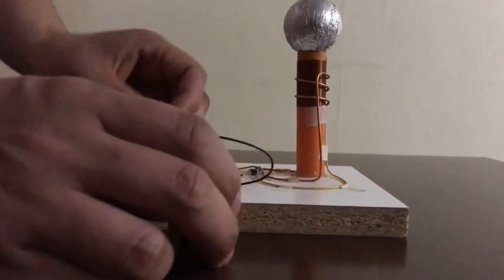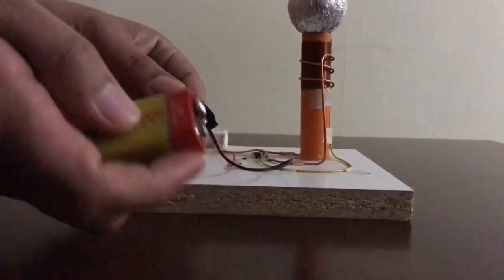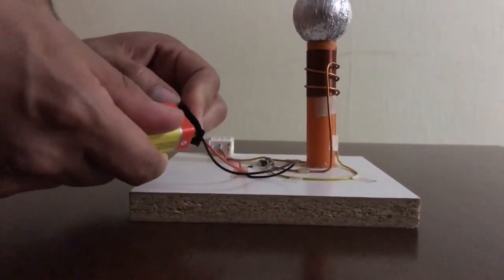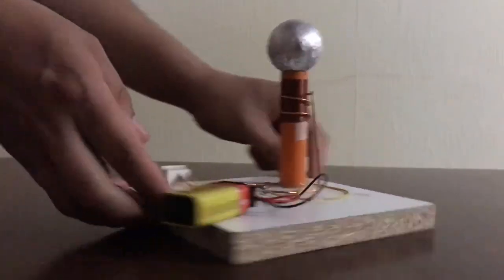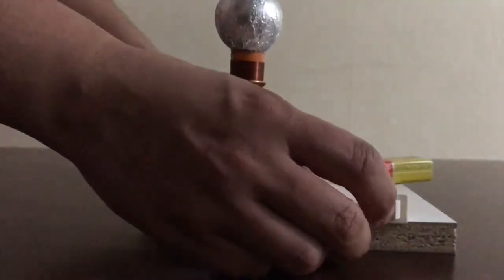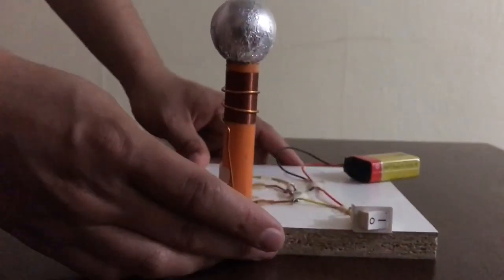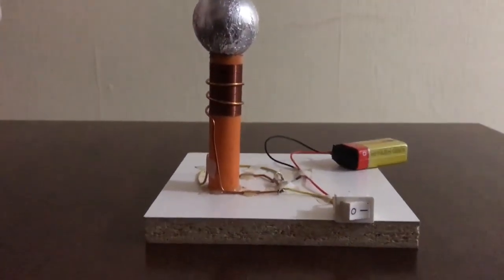Ahora vamos a hacer funcionar nuestra mini bobina. Vamos a conectar la batería. Lado positivo y lado negativo. Ahora encendemos nuestro circuito. Ya hay corriente en nuestro sistema.